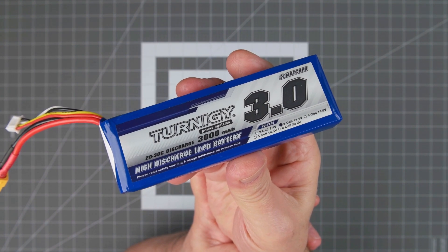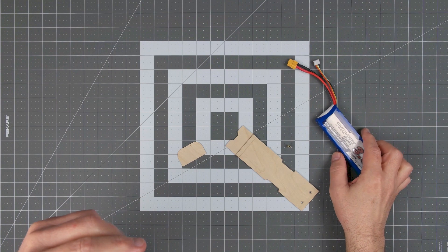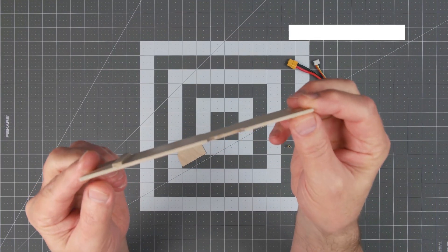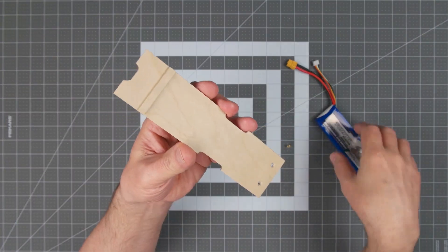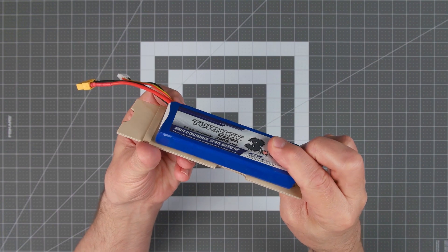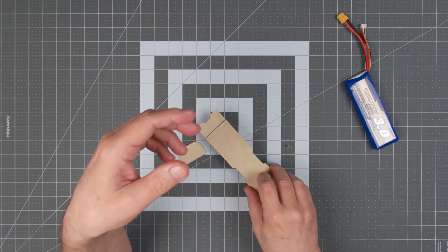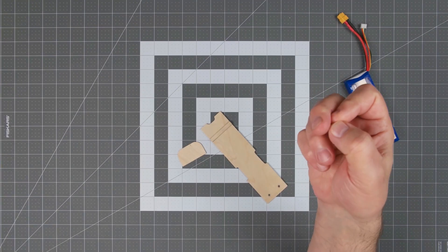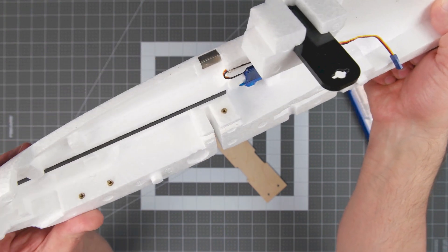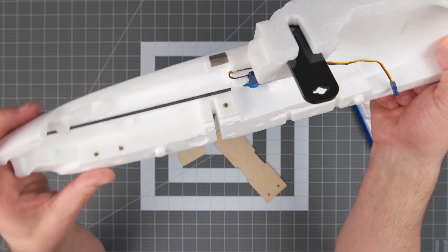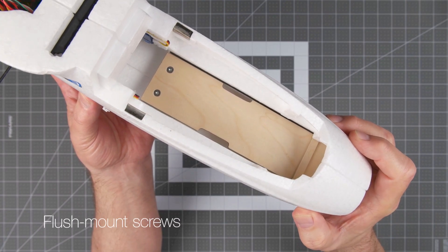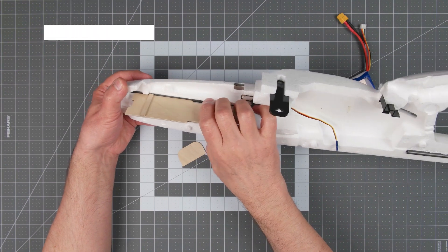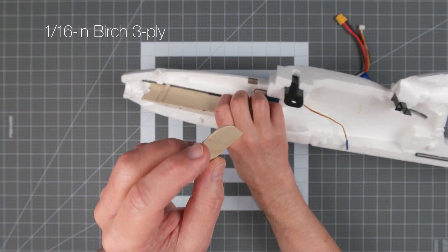Hobby King specs a 2200mAh 3S battery for the Bixler 3, but I had a couple of 3000mAh batteries on hand that I wanted to use instead. The cavity within the battery compartment isn't really set up for a battery that large, so I made a tray that will not only secure the battery, but allow me to move it fore and aft as needed to adjust the CG. The tray is held in place at the front by the existing foam reinforcement ribs and at the rear by two M3 embedded nuts I installed. I also made a small plywood bulkhead that sits forward of the tray to help hold back the battery on hard landings.